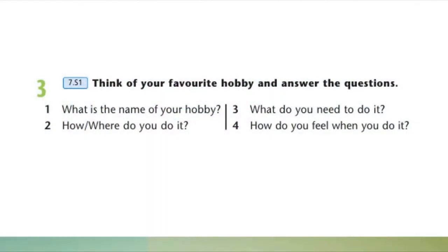И последнее задание для этого урока упражнение 3 на странице 15. Подумайте о вашем любимом занятии, хобби и ответьте на данные вопросы. What is the name of your hobby? Как называется ваше хобби? How and where do you do it? Как и где вы этим занимаетесь? Третье предложение: What do you need to do it? Что вам нужно для того, чтобы заниматься им? И последний вопрос: How do you feel when you do it? Что вы чувствуете? Как вы себя чувствуете, когда вы занимаетесь этим?